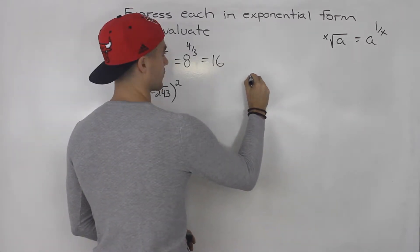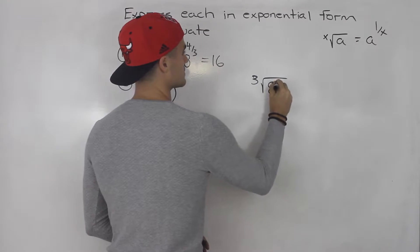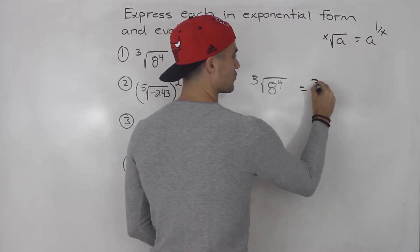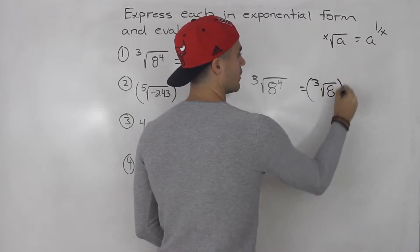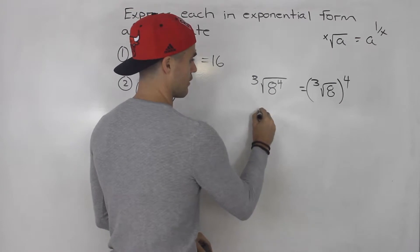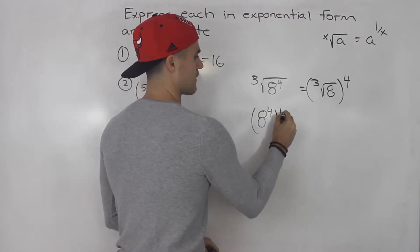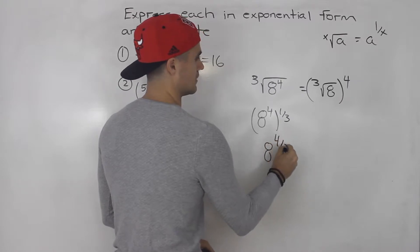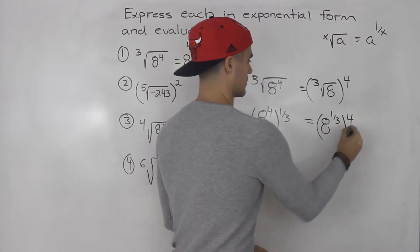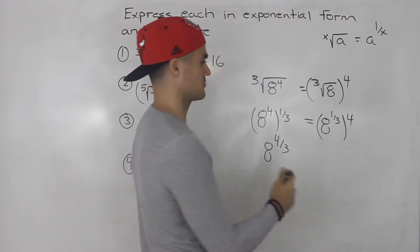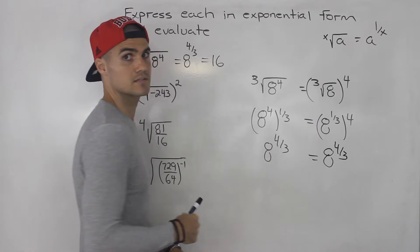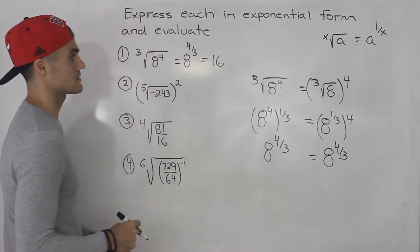Also worth noting: the third root of 8 to the power of 4 is the same as the third root of 8, that quantity to the power of 4. These two radical forms are equivalent — the exponents are just switched — but when you multiply them you get the same result, and both evaluate to 16.